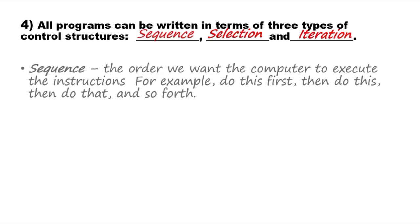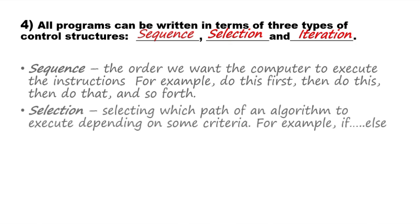Sequence lets the computer know how to execute the instructions in order, for example first and second. Selection involves selecting which path of an algorithm to execute depending on some criteria, using an if statement.